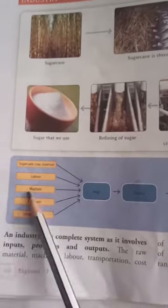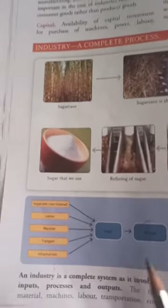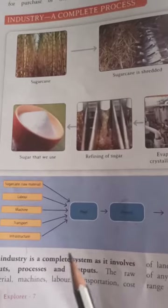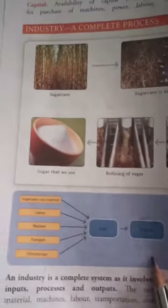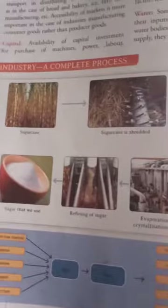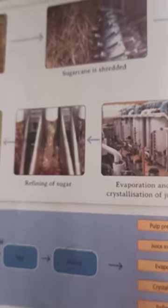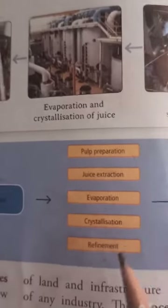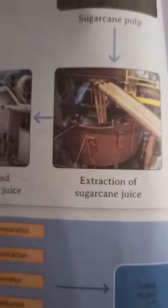We studied that industry is a complete system as it involves inputs, processes, and outputs. What comes under inputs? We have raw materials, machines, labor, transportation, cost of land, and infrastructure. The processes involve a wide range of activities in which the raw material is converted into a product — bulk preparation, juice extraction, evaporation, crystallization, and refinement. The output of the industry is the end product and the profit earned from it.